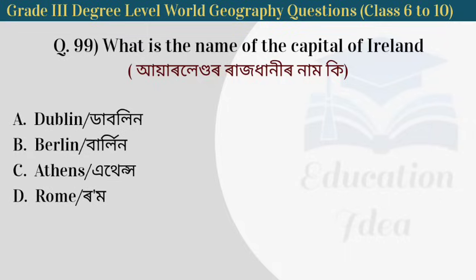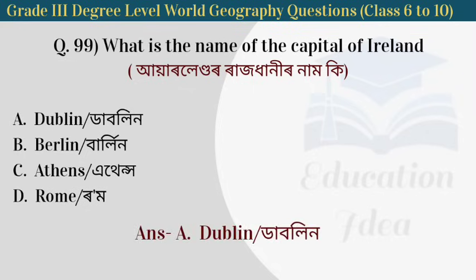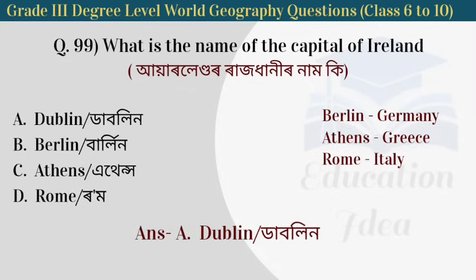Next question: what is the name of the capital of Ireland? The capital of Ireland is Dublin. Berlin is the capital of Germany, Athens is the capital of Greece, and Rome is the capital of Italy.